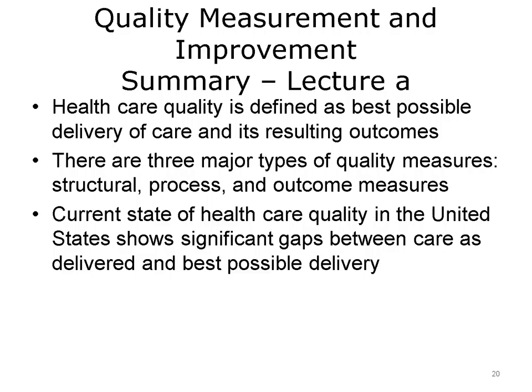In summary, health care quality is defined as the best possible delivery of care and its resulting outcomes. There are three major types of quality measures: structural, process, and outcome measures. The current state of health care quality in the United States shows that there are significant gaps between care as delivered and the best possible delivery.